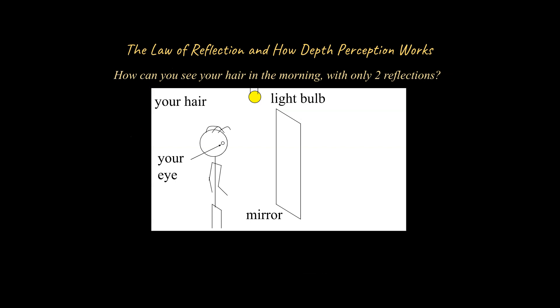My question is: how can you see your hair in the morning with only two reflections? If you look in a mirror and look at your hair, how are you able to see it? Take a moment to think about this — if you can sketch it out, that's even better. The first thing to remember is that our eyes are receivers of light information, so light rays need to end at our eyes. In this case, we start from the light bulb, and that light comes down and reflects off of our hair.